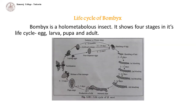Life cycle of Bombyx: among different silkworms, Bombyx is the only domesticated species and is reared in culture rooms. Karnataka, where the temperature ranges from 16 to 31 degrees Celsius, enjoys favorable climatic conditions for rearing Bombyx throughout the year. In West Bengal, multivoltine silkworm rearing is practiced even under adverse temperature conditions. In Jammu and Kashmir, rearing is practiced only during May and June. Bombyx is a holometabolous insect showing four stages in its life cycle: egg, larva, pupa and adult.